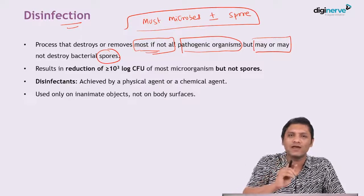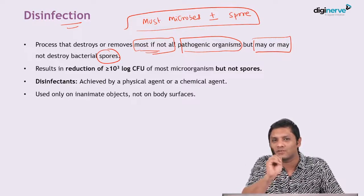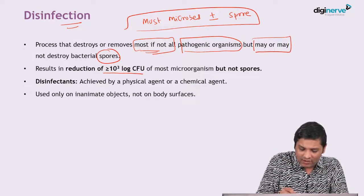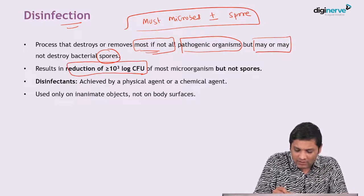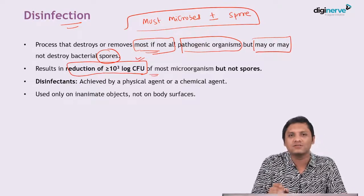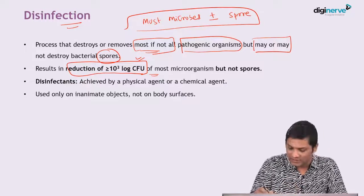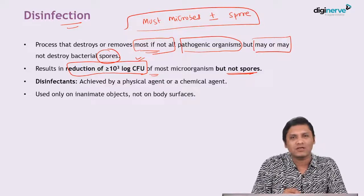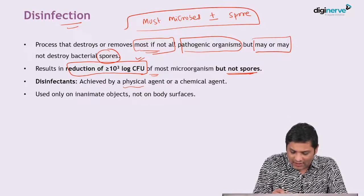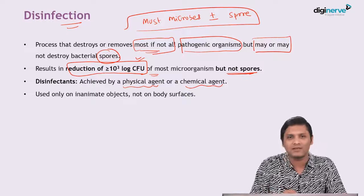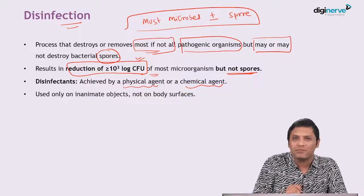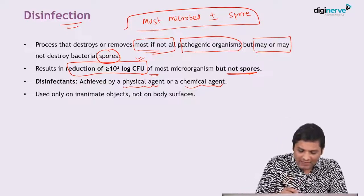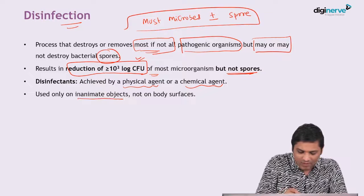In sterilization you will have a log reduction of 10 to the power of 6 microorganisms, whereas in disinfection you will have a log reduction of 10 to the power of 3 microorganisms, and spores will not be reduced by the process of disinfection. Disinfection can be achieved by either a physical agent or a chemical agent. Please remember that disinfection is usually a terminology we use for inanimate objects.